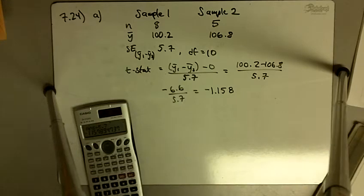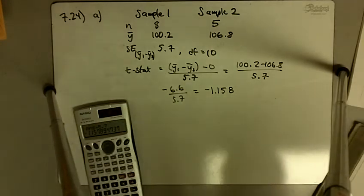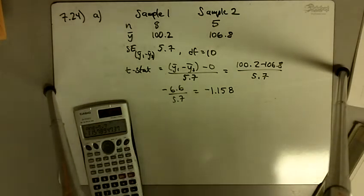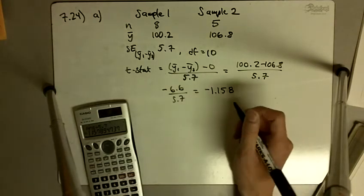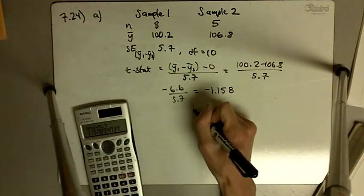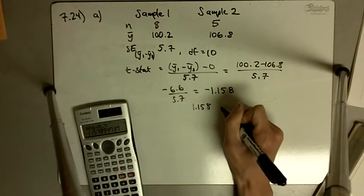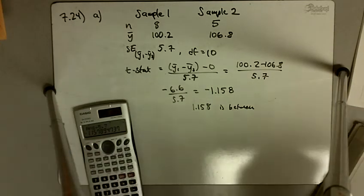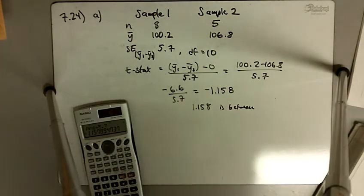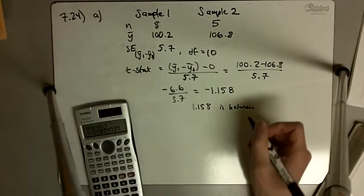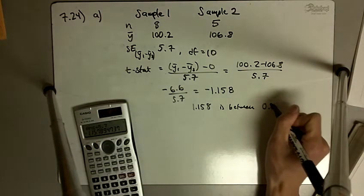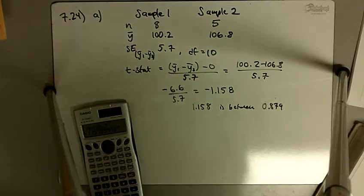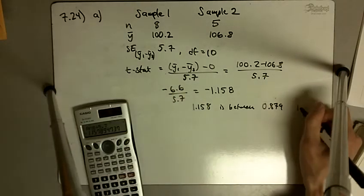We have negative 6.6 divided by 5.7 equals negative 1.158. We go to 10 degrees of freedom. 1.158, we're going to have to look at the positive side. So 1.158 is between 0.879 and 1.372.